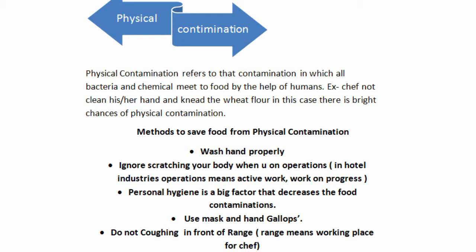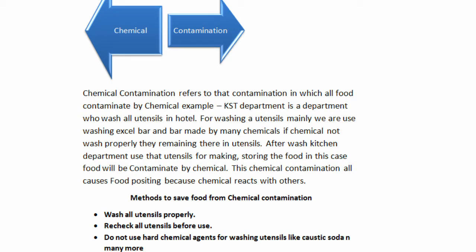Second is physical contamination. Physical contamination creates many problems because humans are the main reason. Unwashed hands and ungroomed people create this contamination. For example, if I am a chef and I don't wash my hands or cut my nails, they contain lots of traces and bacteria. When kneading wheat flour, all that bacteria absorbs into the flour — that also creates physical contamination.